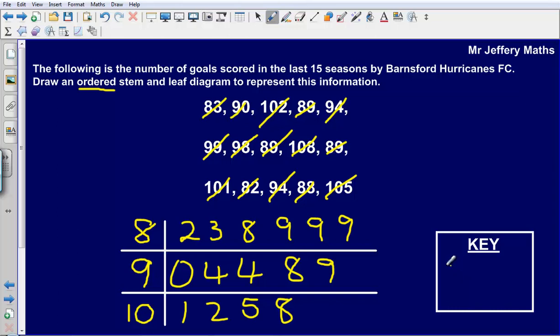So what we could say is that an 8 followed by a line, so that bit here, and then a number after it say 2, we will just take the first number in our stem and leaf diagram. That represents the number 82.